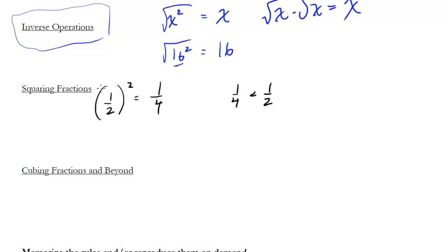Very strange. Normally if I square 2, I get 4 and 4 is bigger than 2. The opposite occurs here — the thing I get when I square a fraction is actually smaller. So keep that in mind.